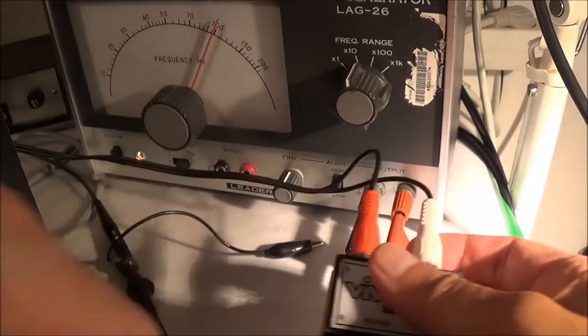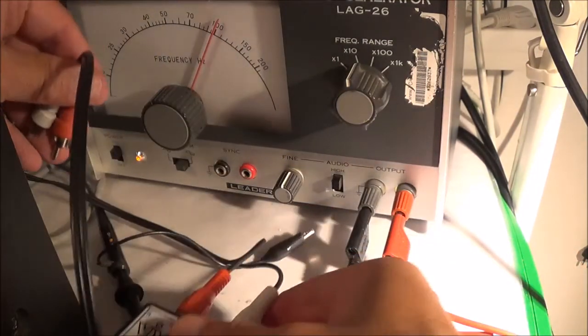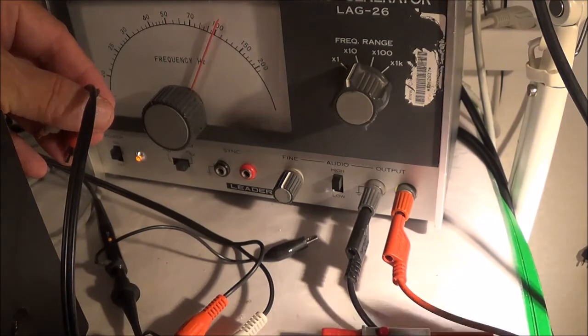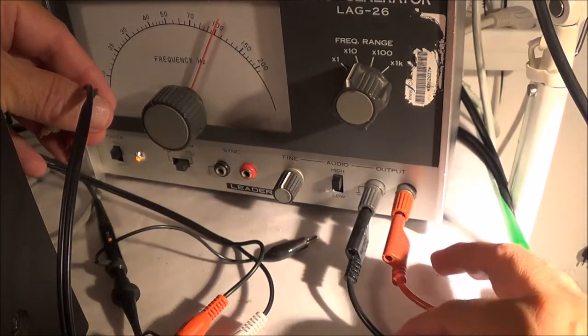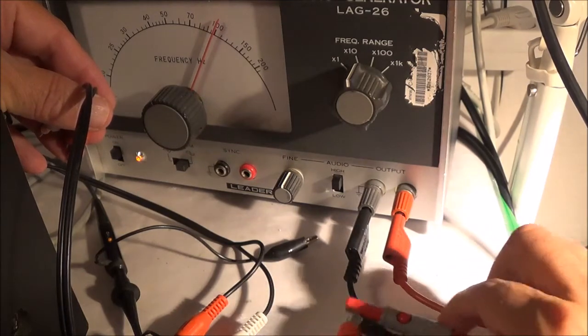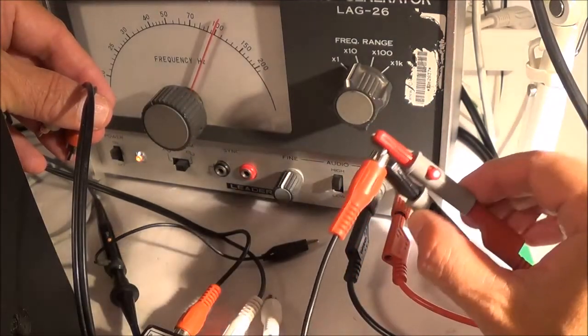And then we take this other end that goes into the phono input. So we got coming out of here, got the alligator clips on the in here, and that's just going into a regular RCA type cable here.